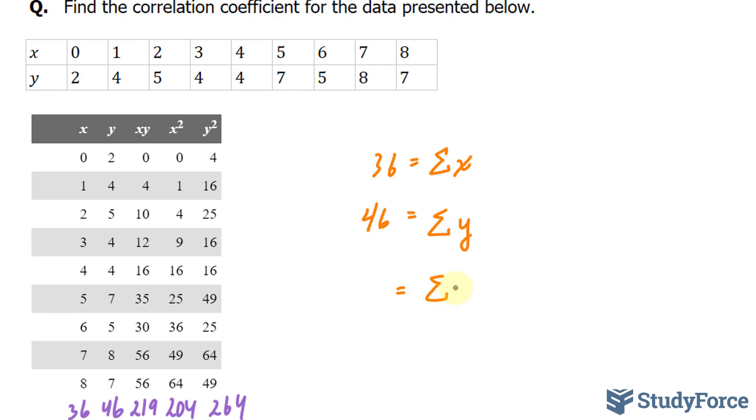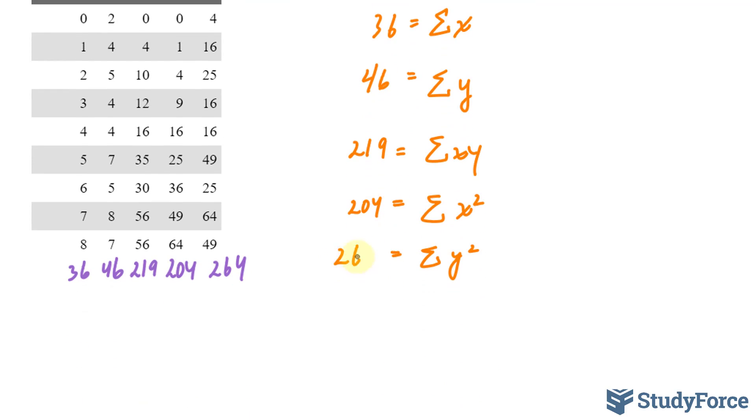The sum of y was 46. The sum of xy is 219. The sum of x to the power of 2 was 204. And the sum of y to the power of 2 was 264.